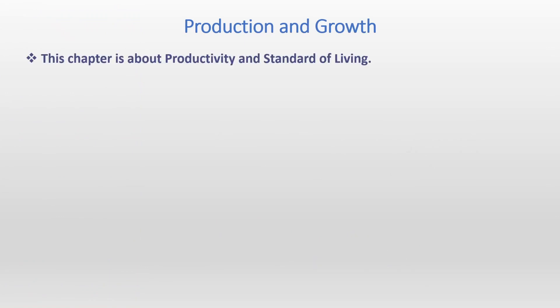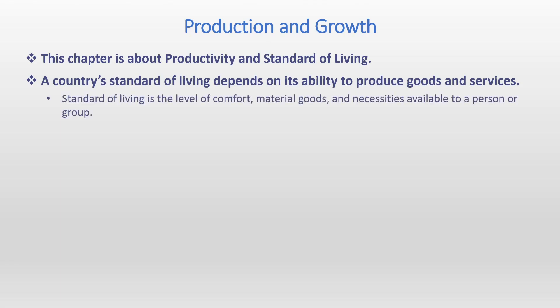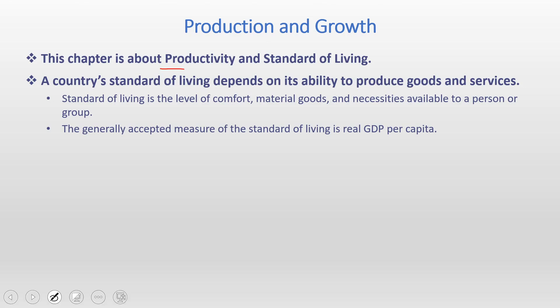This chapter is about productivity and standard of living. A country's standard of living depends on its ability to produce goods and services. Standard of living is the level of comfort, material goods, and necessities available to a person or group. The generally accepted measure of standard of living is real GDP per capita.